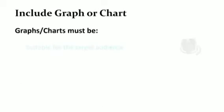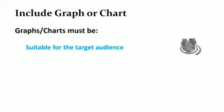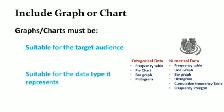Graphs or charts must be suitable for the target audience. It must also be suitable for the data type it represents. Keep in mind that you cannot use a data display for discrete data to represent continuous data. For example, data reflecting height, width, length and time should not be displayed using pictograms, bar graphs or pie charts. Rather, line graphs, histograms or frequency polygons can be used.